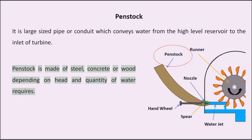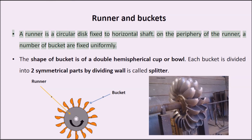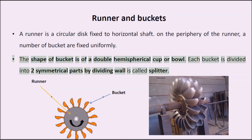Runner and buckets: A runner is a circular disk fixed to a horizontal shaft. On the periphery of the runner, a number of buckets are fixed uniformly. The shape of each bucket is a double hemispherical cup or bowl. Each bucket is divided into two symmetrical parts by a dividing wall called the splitter.